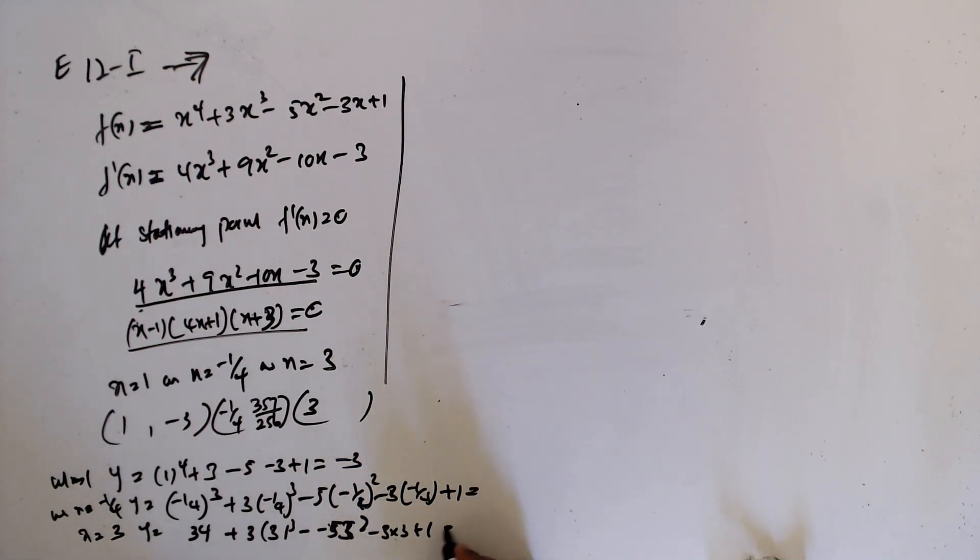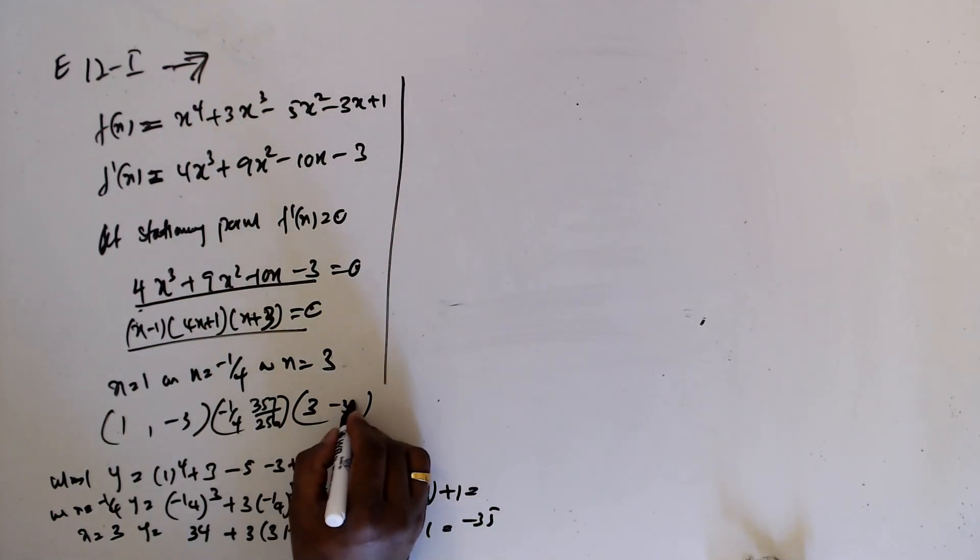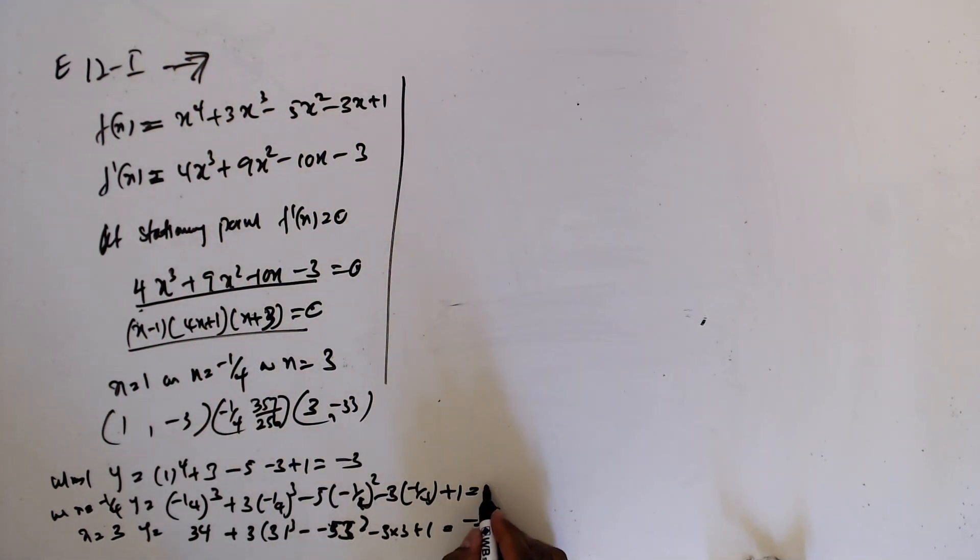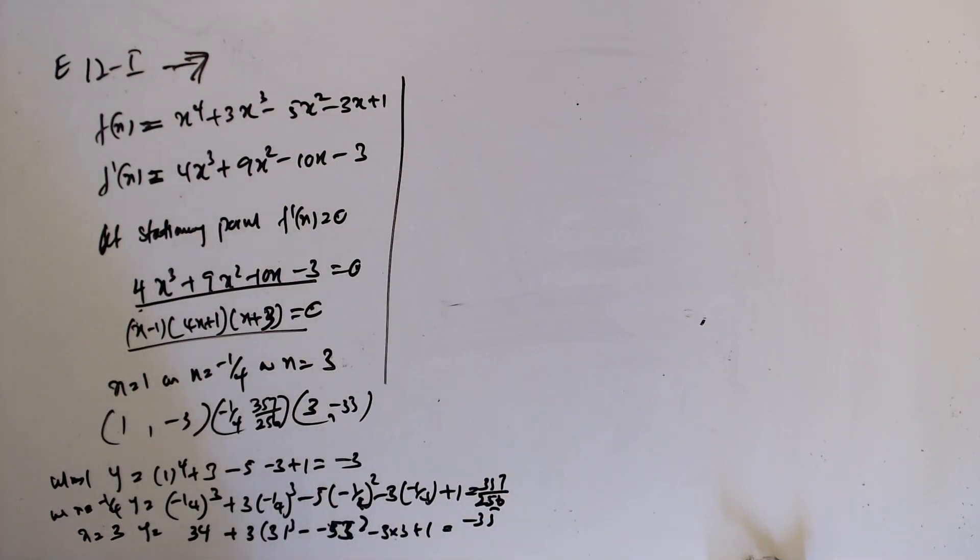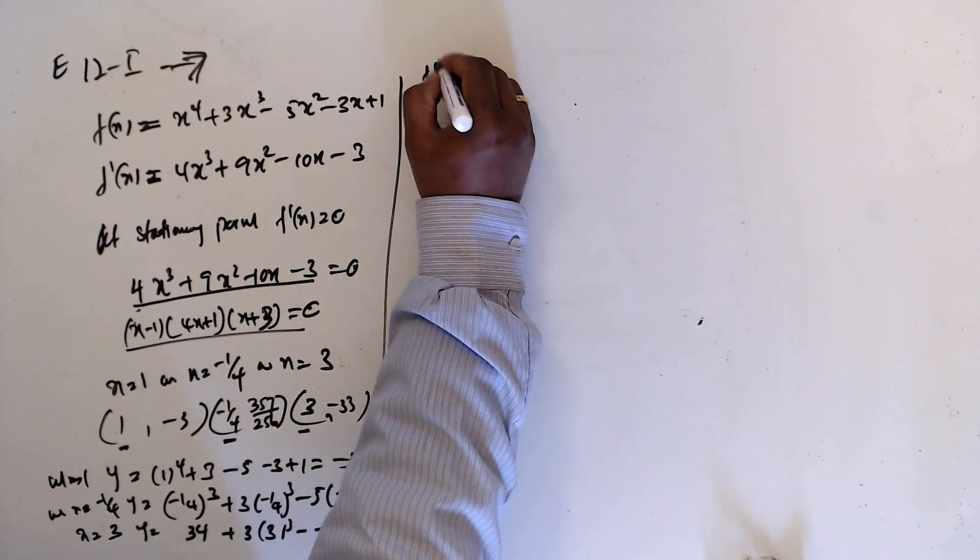give minus 35. Now we want to decide if those points are minimum, maximum, or point of inflection. Now f double prime...